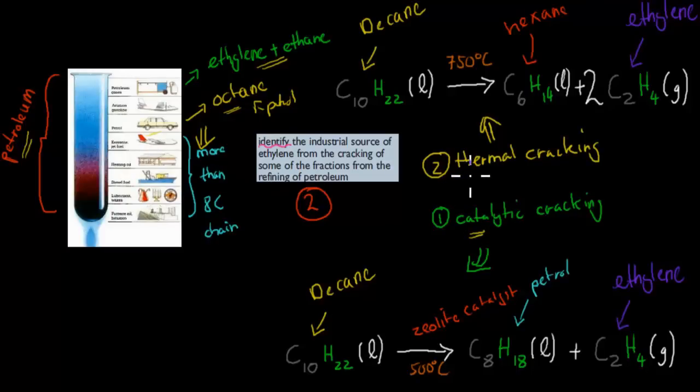There's catalytic cracking and thermal cracking. In catalytic cracking, we can start with something like, for example, decane, which has 10-carbon in its chain. We have a catalyst, because it's called catalytic cracking. In this case, a zeolite catalyst, and we have 500-degree Celsius. That makes petrol, so octane, and ethylene. So what we wanted, this is what we're trying to get, ethylene. So that's one way we can produce ethylene.